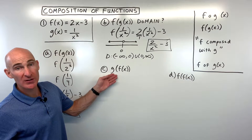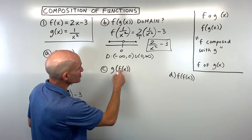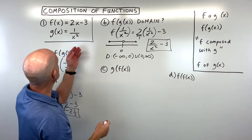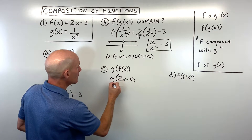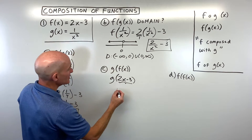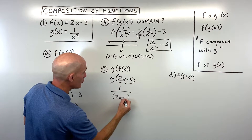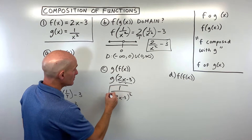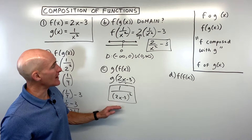What if we want to compose them in the opposite direction — g of f of x? Here we're putting the f function into our g function. f of x is 2x minus 3. So 2x minus 3 becomes our input for x in g, giving us 1 over the quantity 2x minus 3 squared. You could leave it like this, or foil out 2x minus 3 times 2x minus 3.